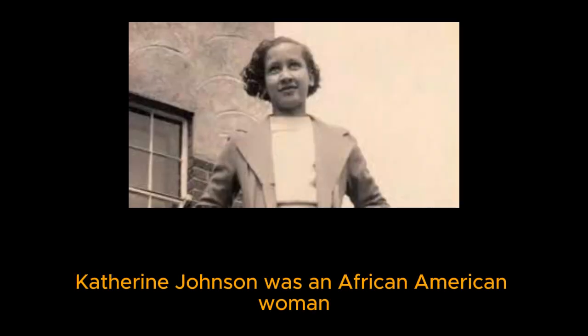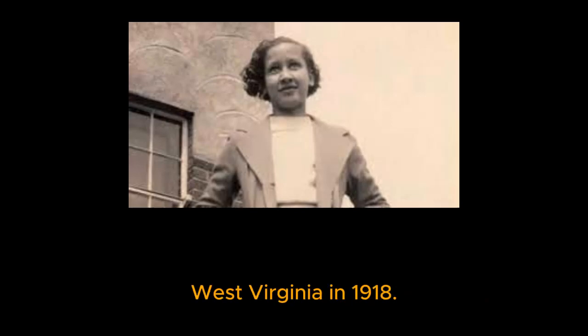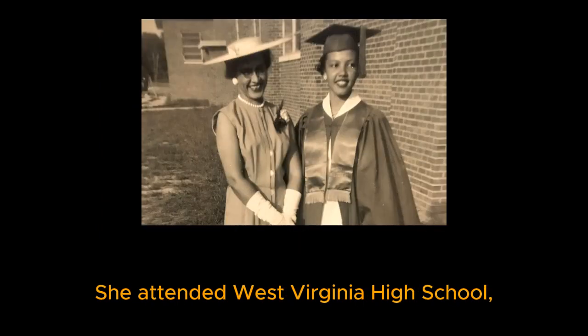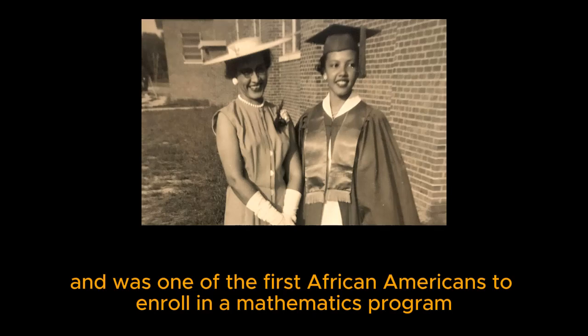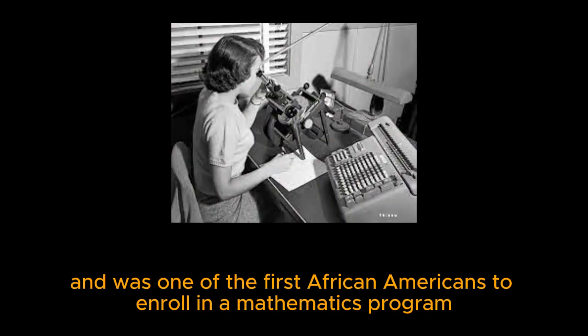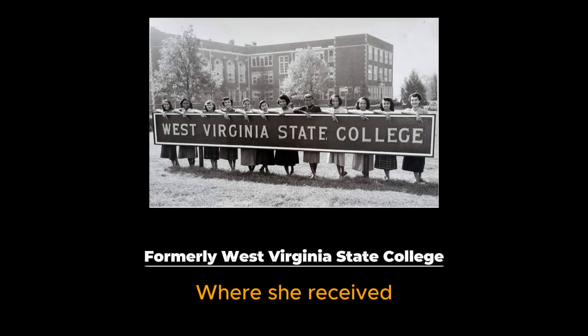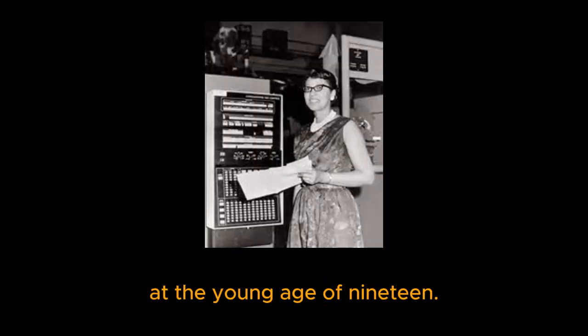Katherine Johnson was an African-American woman who was born in White Sulphur Springs, West Virginia in 1918, who from a young age excelled in solving mathematical equations. She attended West Virginia High School, graduated at the age of 14, and was one of the first African-Americans to enroll in a mathematics program at West Virginia State University, where she received her Bachelor of Science degree in French and Math at the young age of 19.